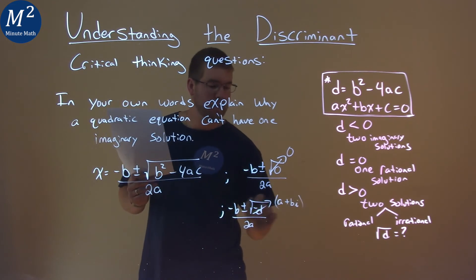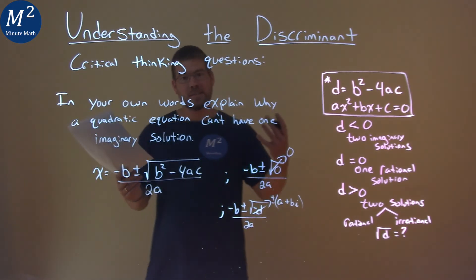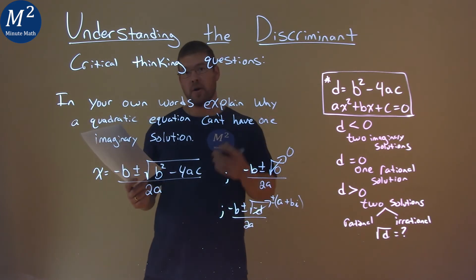But we're also having to do the plus or minus there. So plus or minus is going to be applied to that, meaning we always will have two solutions, two different ones that are imaginary.